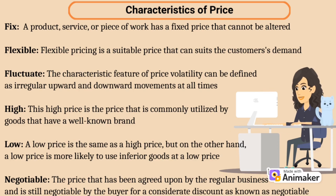Fourthly, is high. This high price is the price that is commonly utilized by goods that have a well-known brand. Furthermore, we also have low. A low price is the same as a high price, but on the other hand, a low price is more likely to use inferior goods at a low price. Other than that, is negotiable. Negotiable is the price that has been agreed upon by the regular business and is still negotiable by the buyer for a considerable discount. And the rest, we have expensive, cheap, affordable, profitable, break-even, and competitive.